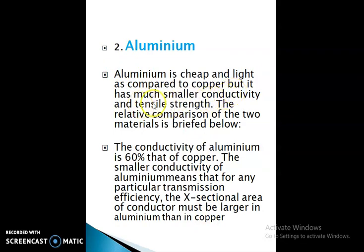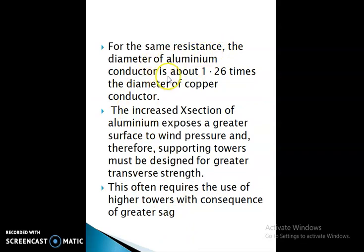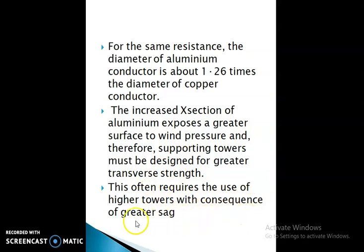The trend is to use aluminum in place of copper. Aluminum is cheap and light compared to copper, but has much smaller conductivity and tensile strength. The conductivity of aluminum is 60 percent that of copper, meaning for any particular transmission efficiency, the cross-sectional area must be larger in aluminum than copper. For the same resistance, the diameter of the aluminum conductor is about 1.26 times the diameter of the copper conductor. The increased cross-section exposes a greater surface to wind pressure, so supporting towers must be designed for greater transverse strength, requiring higher towers with consequent greater sag.